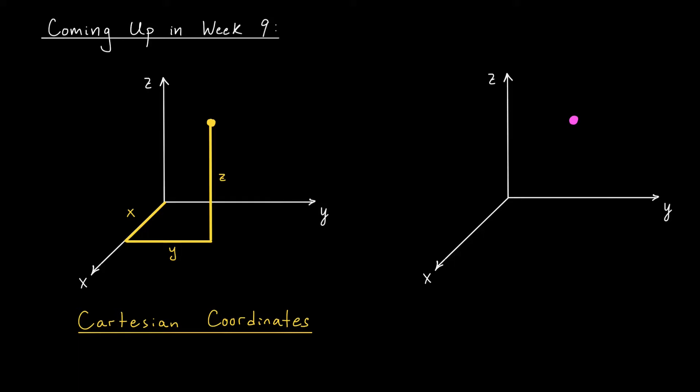But in certain situations, it may be more natural to describe this same point in a completely different way. For instance, I could tell you how to get to this point by specifying its distance to the origin, which maybe I'll call rho, the angle it makes with the positive X-axis, theta, and the angle it makes with the positive Z-axis, phi. These three pieces of information give us a new way to describe this point in space. They're known as the point's spherical coordinates.